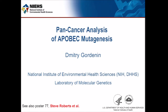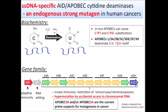APOBEC — by way of brief introduction, and why APOBECs are of interest or should be of interest to this group — APOBEC enzymes are endogenous strong mutagens in human cancers.